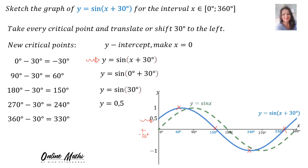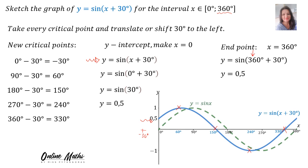That is how I knew the Y-intercept is the point (0, 0.5). You can also calculate the end point. The end point is at 360 degrees, since the interval goes up to 360. Substituting X = 360 into the formula gives Y = 0.5. So the end point is the point (360, 0.5). It's very clear that this graph shifted to the left.